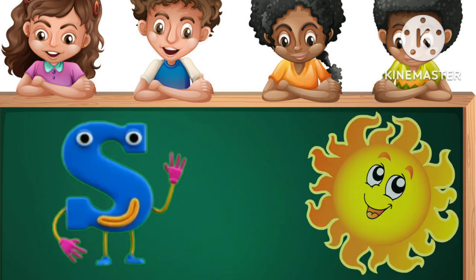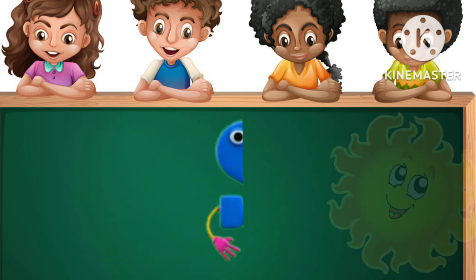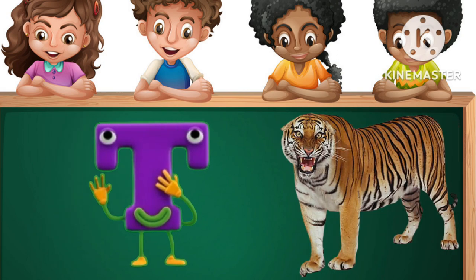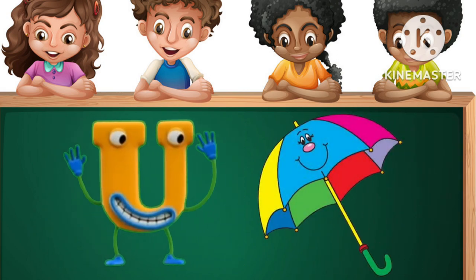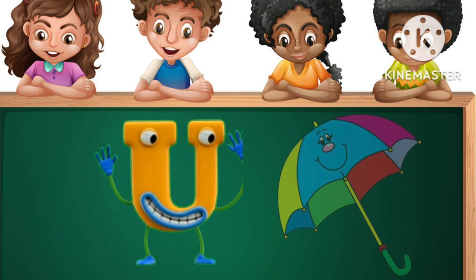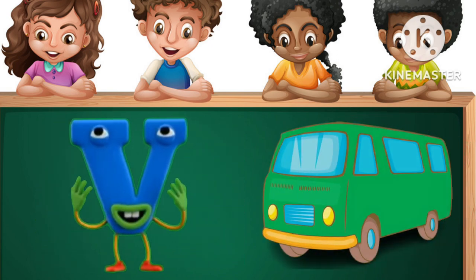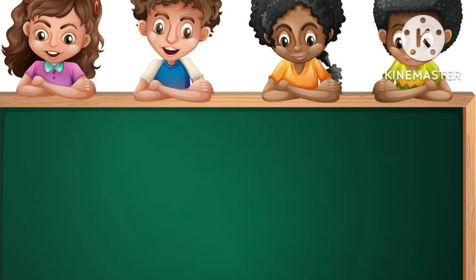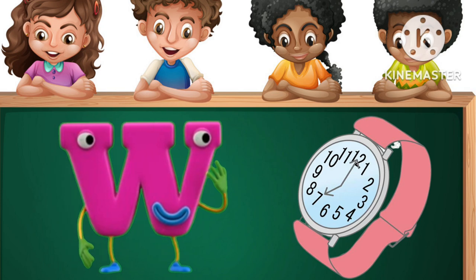S for Sun. T for Tiger. U for Amelia. B for Wind. W for Watch.